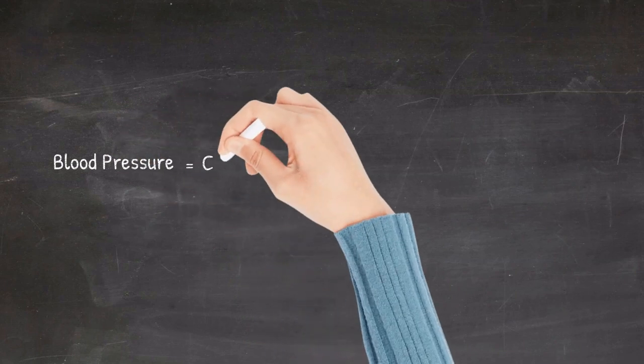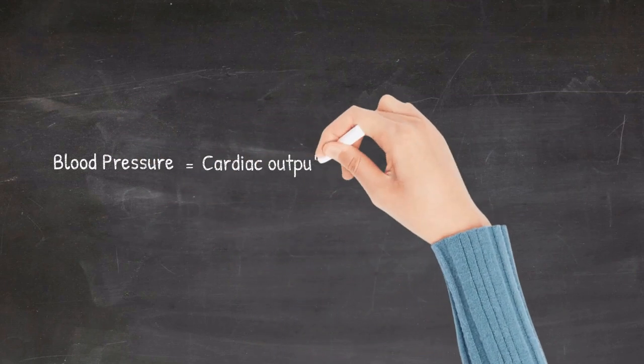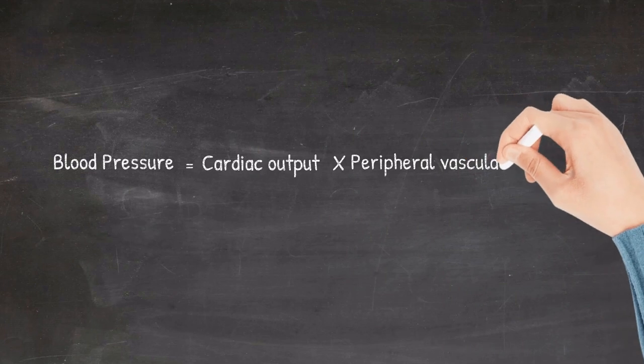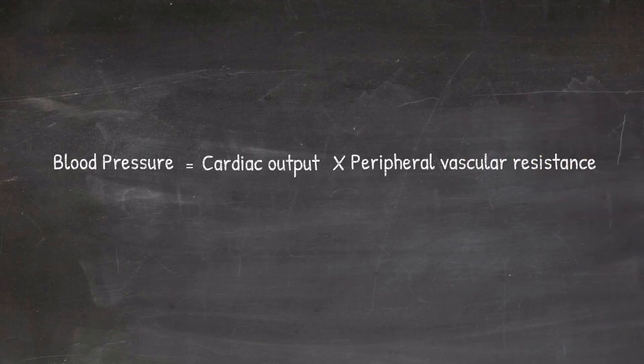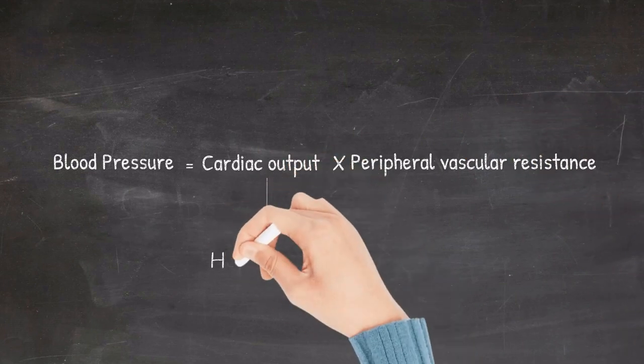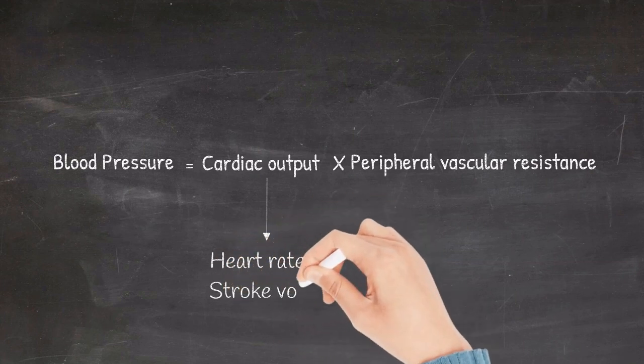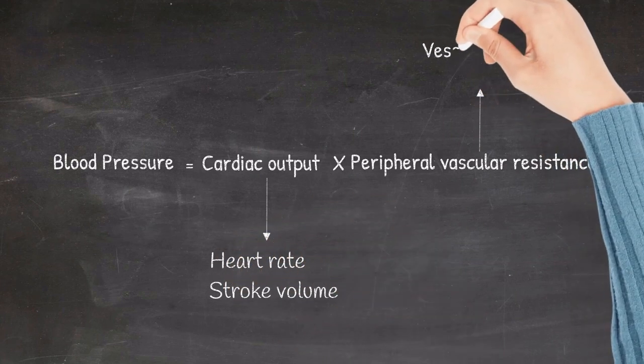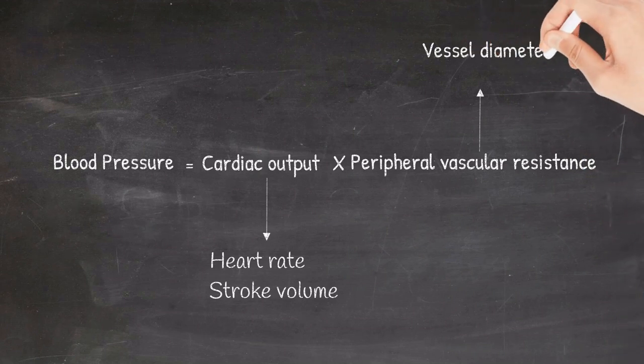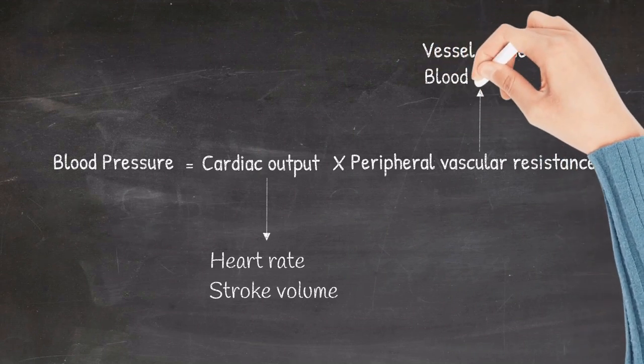Blood pressure is a product of cardiac output and peripheral vascular resistance. The cardiac output is determined by heart rate and stroke volume, whereas the peripheral vascular resistance is determined by the vessel diameter and blood viscosity.